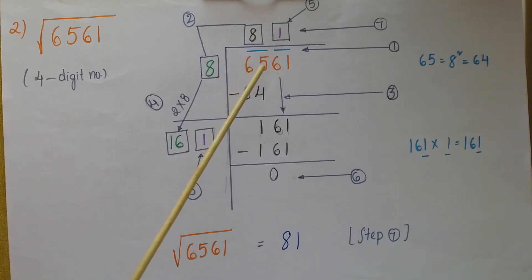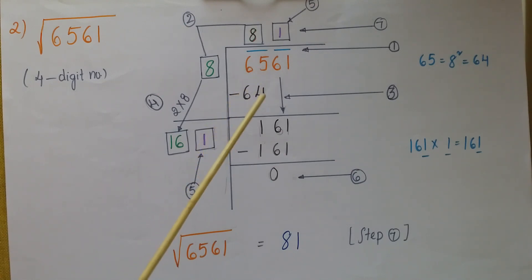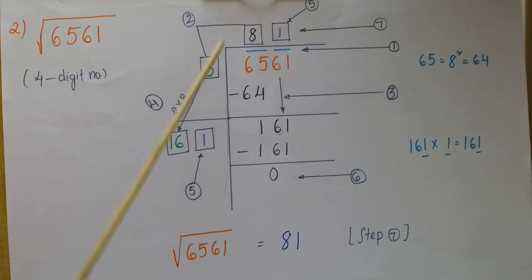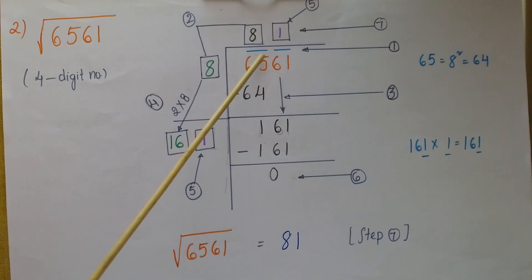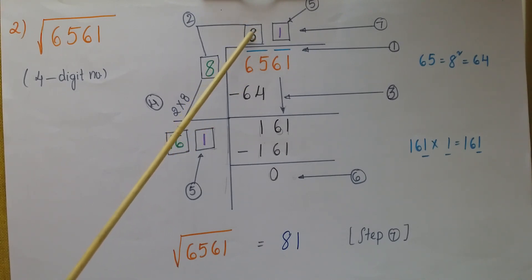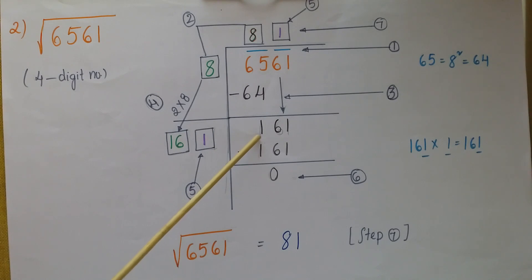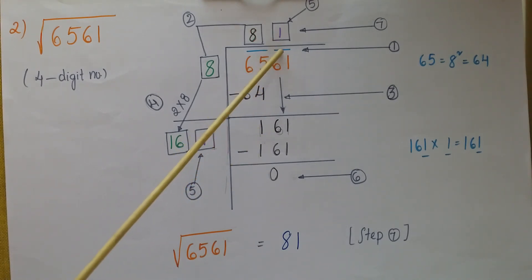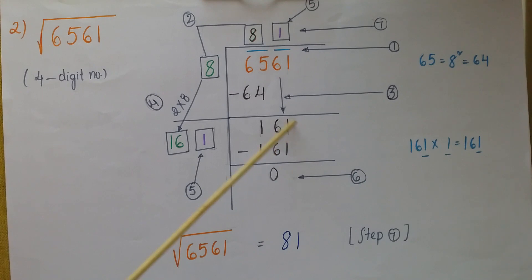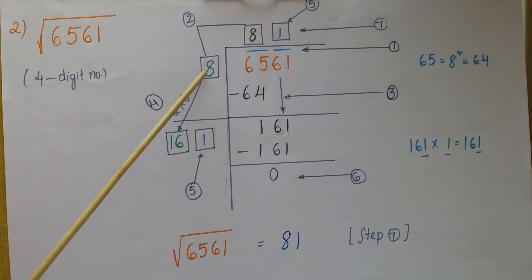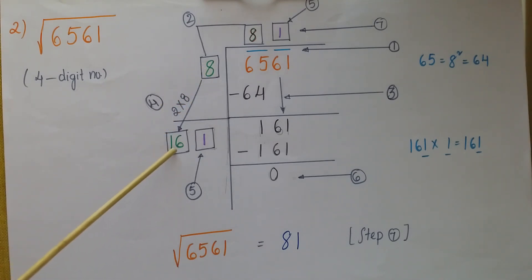In the next step, find a square number less than or equal to 65. Since 64 = 8², write 8 on the divisor place and 8 on the quotient place above the first bar. Subtract 64 from 65 to get 1, then bring down the next digits 61, making the number 161. Double the divisor: 2×8 = 16, so write 16 as the new divisor base.